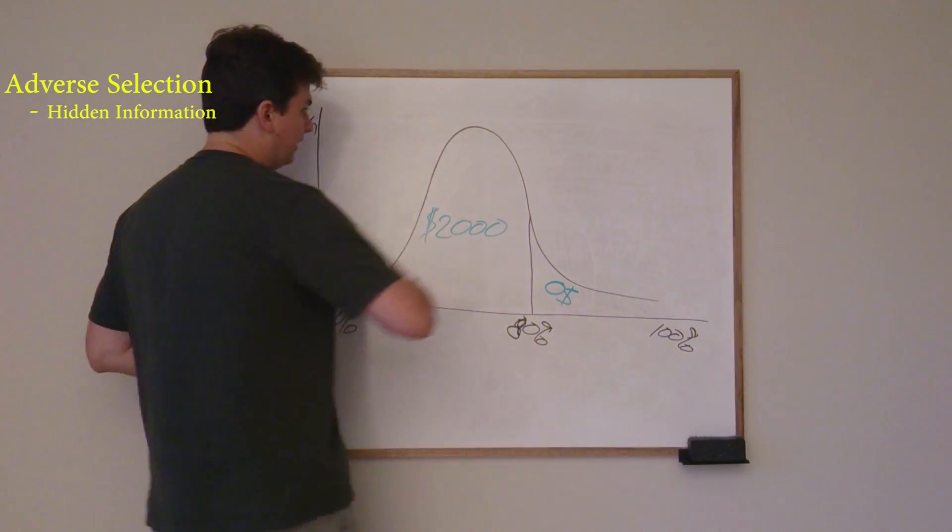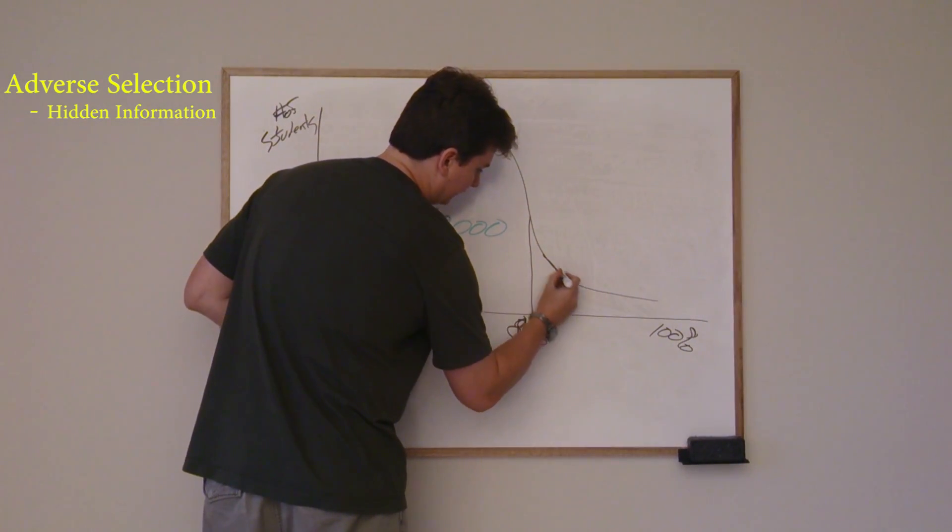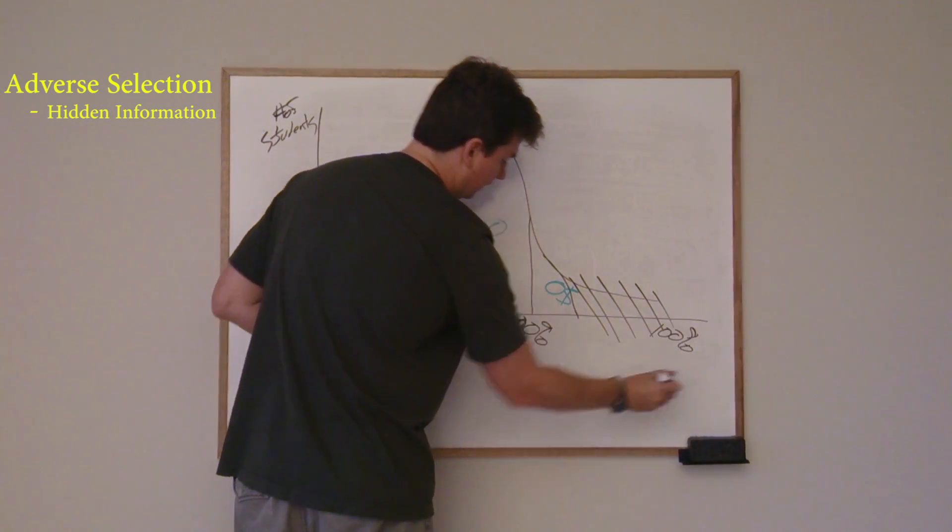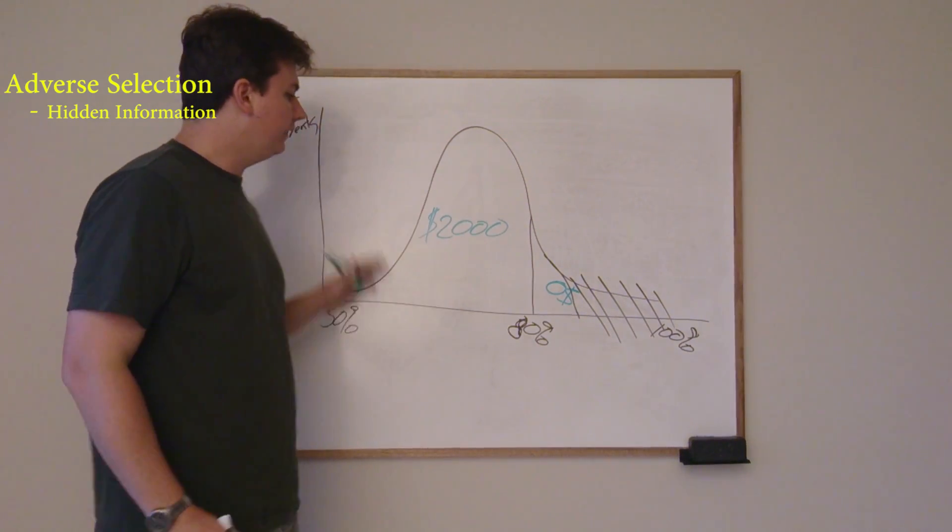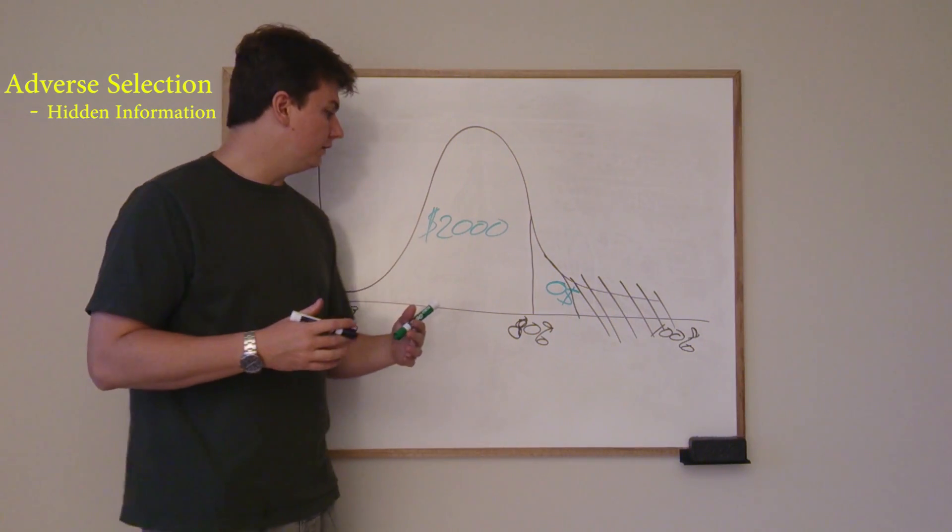But what's going to happen basically, instead of getting this nice curve like this, I'm going to end up with a curve that goes like this. And these people are not buying. So now I just have this little section, so all my calculations get thrown off. And you can see that the same thing occurs. I adjust my price. I adjust my payouts.